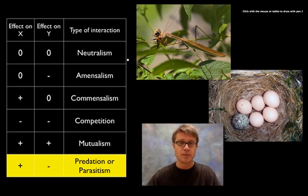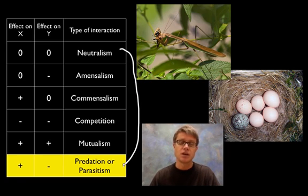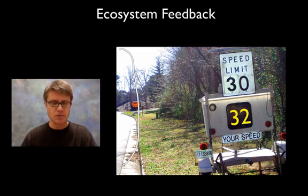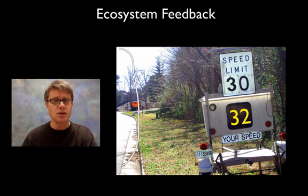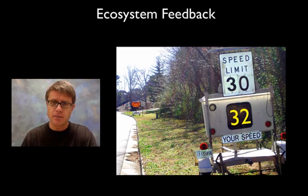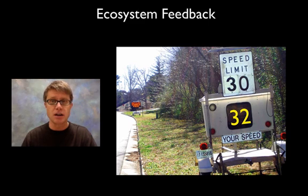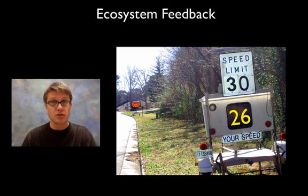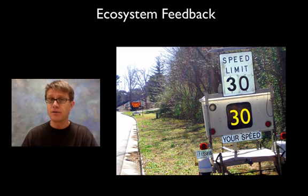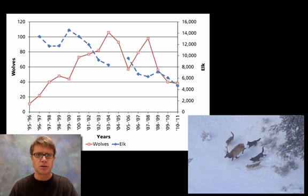Those are all the different types — you should learn these terms and examples of each. Ecosystems contain all these interactions between populations, but ecosystems tend to stay the same using feedback mechanisms. Remember feedback mechanisms: if you're driving and see a speed sign, you slow down too much, then speed up, eventually hitting a checkpoint — that's a negative feedback loop.